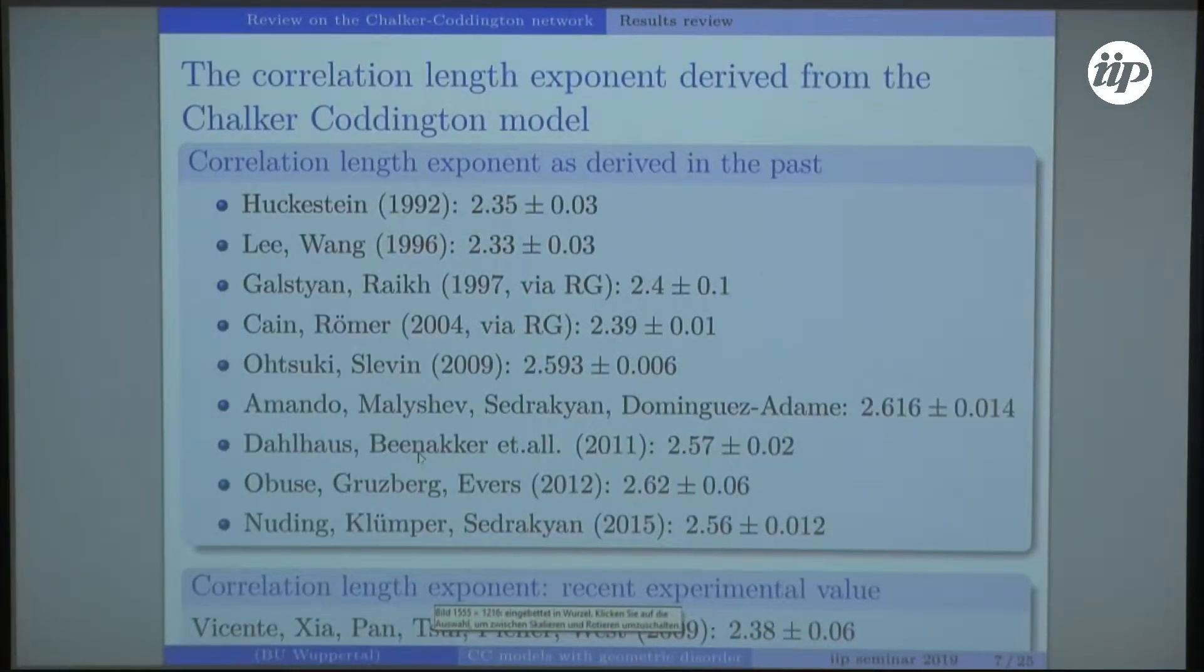This network model has been extensively studied in the past, and it establishes that the correlation length exponent is around 2.6. Early authors had to struggle with lack of computational power in those days. Now agreement is better, but it does not really coincide with the experimental value, so there's still something to be understood.